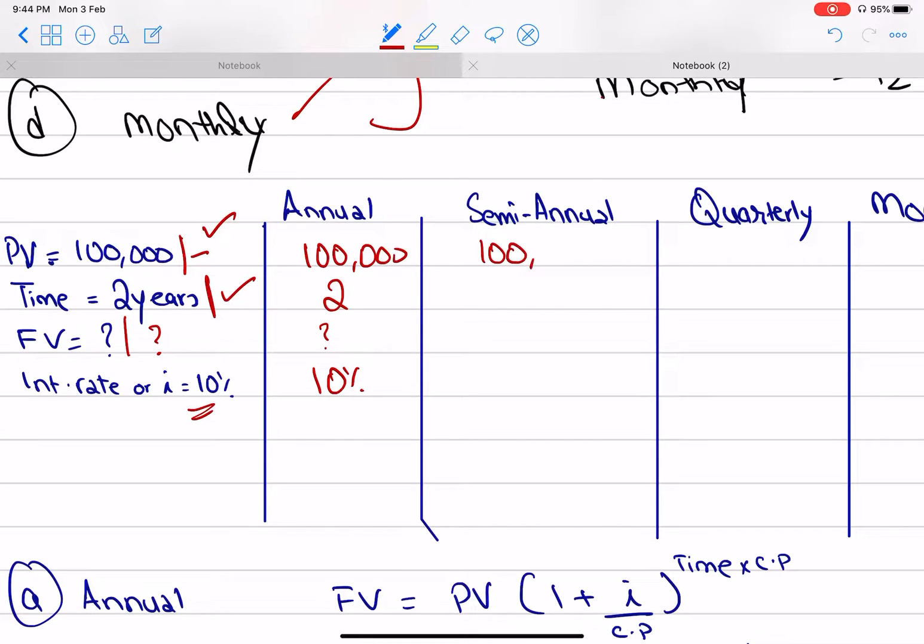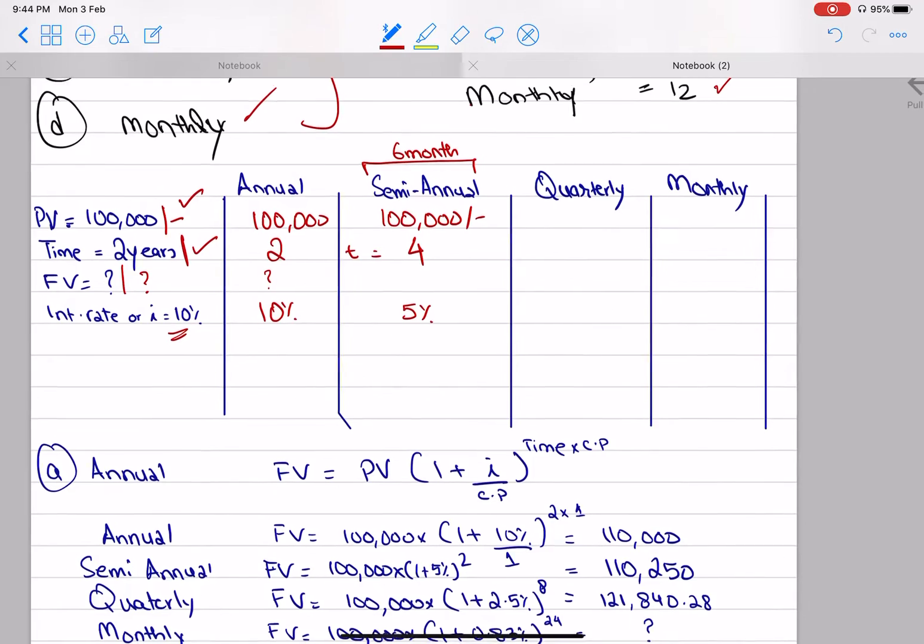If the same thing is converted to semi-annually, I want to invest $100,000. If I get a return every 6 months, how much return will I get in 2 years? 4 times. My time would now be 4, because the rate is 10% per year. What will I get in 6 months? 5%.